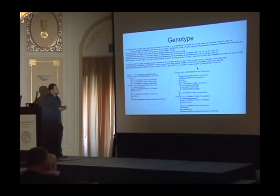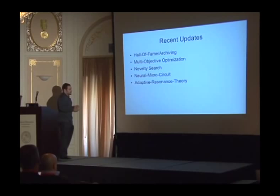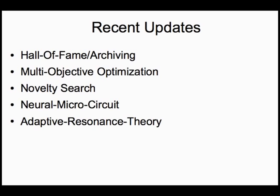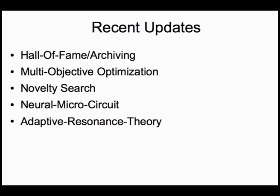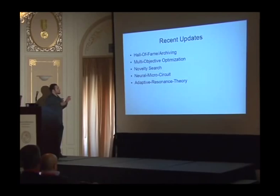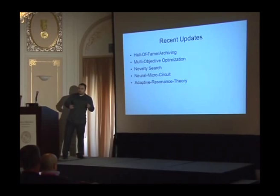The system has recently been updated. It started off using standard mutation operators, but now I've updated it to use Hall of Fame and archiving, which have significantly improved its performance. It now uses multi-objective optimization, incorporates novelty search, which has become recently very popular, and my most recent research is in the use of neural microcircuits and the utilization of complex numbers in neurons, and it also now supports adaptive resonance theory.